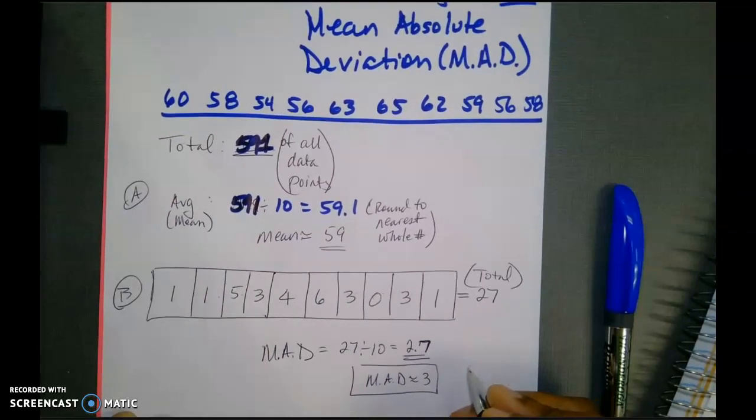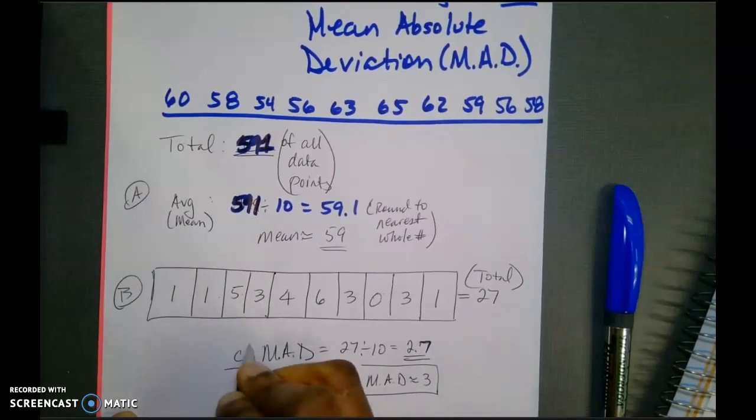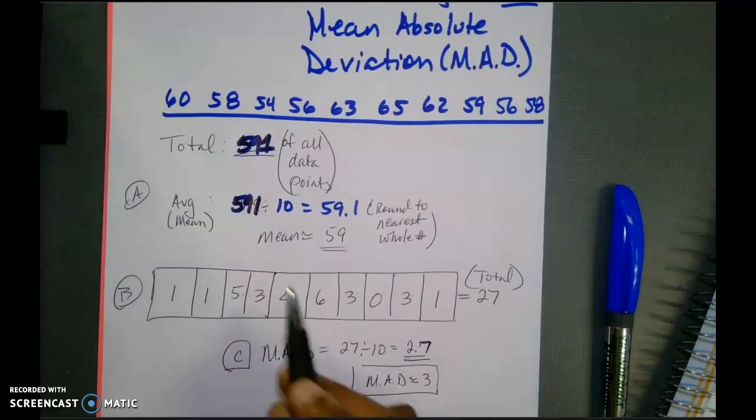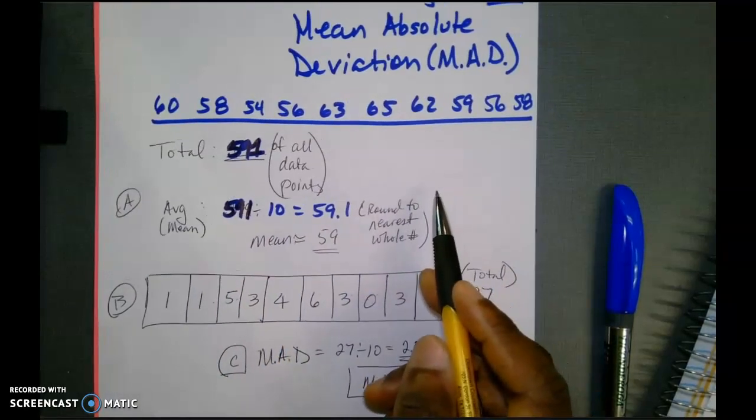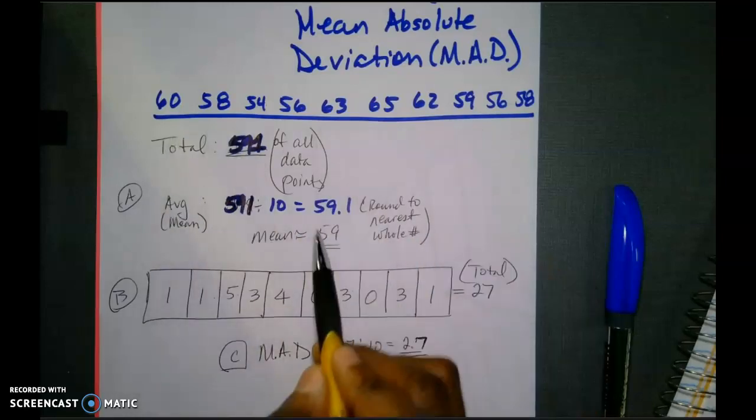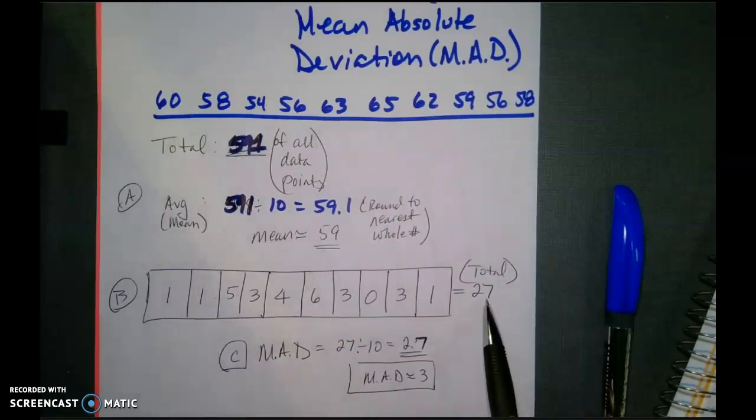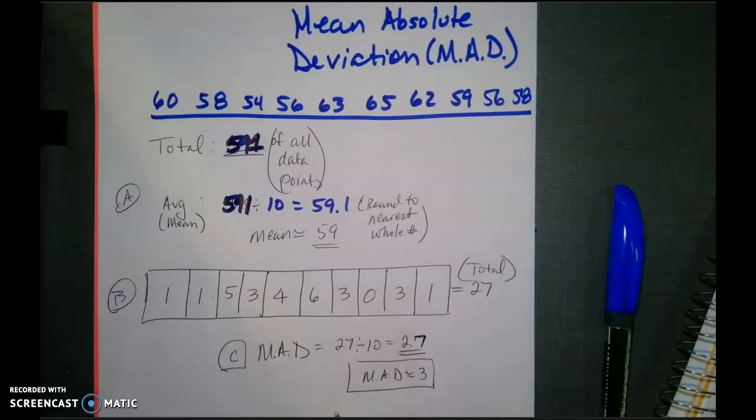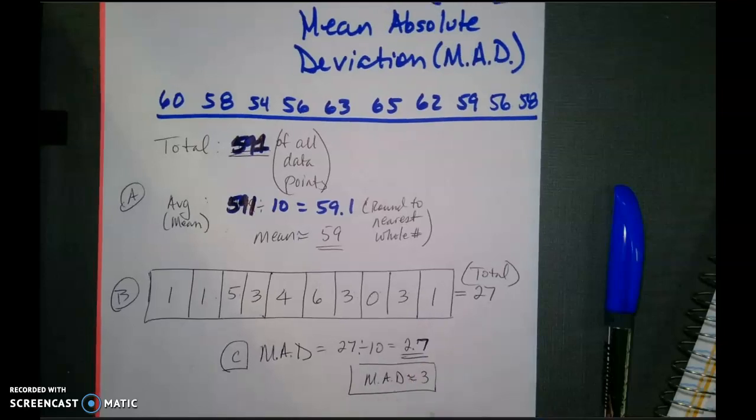So at this point, we have three different steps. First of which is to find the mean of my overall data set. Once I've located the mean of my data set, what I would do is I would divide that number by the total number of data points that I have. The total number of data points that I have was 10. Once I divide that out, 59.1, round it to the nearest whole number, 59. And then I'm going to take the distance that each one of these data points is from this approximated mean. Add that up. And then once I add those up, I'm going to divide it again by the total number of data points. Mean absolute deviation is approximately three. That is it, you guys.